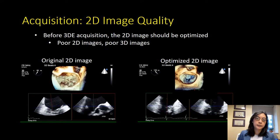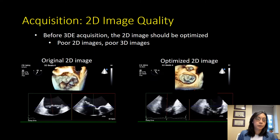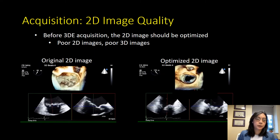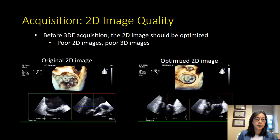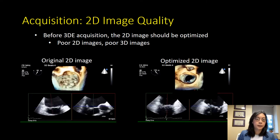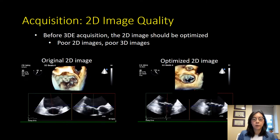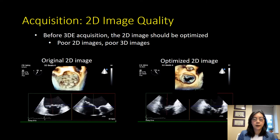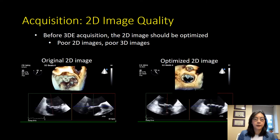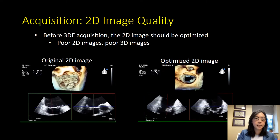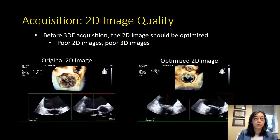The first step in acquiring a 3D data set is to optimize your 2D image quality. If you look at the image on the left, I've used multi-planar mode so you can see the cross planes of this mitral valve as well as the 3D data set. In the left atrium there's artifact causing noise when you look at the 3D data set. On the image on the right, a different angle gives a much cleaner left atrium, and the mitral valve is visualized much nicer without the noise. If you have poor 2D images you'll get poor 3D images, so you really have to spend the time to optimize your 2D image before you acquire your 3D.